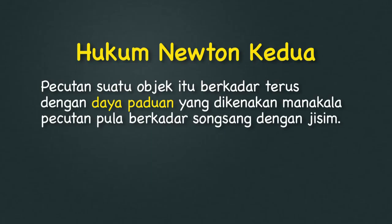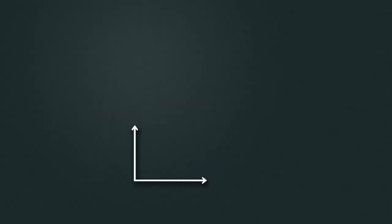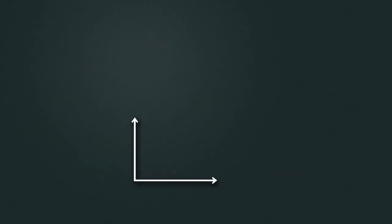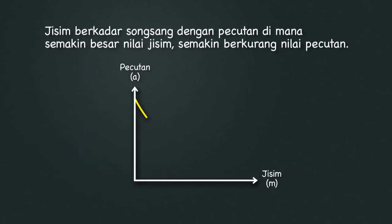Berdasar pernyataan hukum Newton kedua, kita juga boleh membuat hubungan berikut. Satu, pecutan berkadar terus dengan daya paduan di mana semakin besar daya paduan, semakin besar nilai pecutan. Dua, jisim pula berkadar songsang dengan pecutan di mana semakin besar nilai jisim, semakin berkurang nilai pecutan.